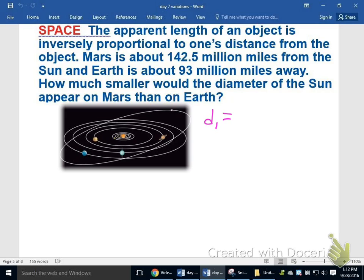And I might just go ahead and put in the 93 million miles. I can actually just write it as 93, since the other one is in millions of miles as well. Okay, so this is the diameter of the sun on Earth, equal to k over 93, because its apparent length is inversely proportional to the distance from the object. That's the reason why it's k divided by 93, inverse proportion.